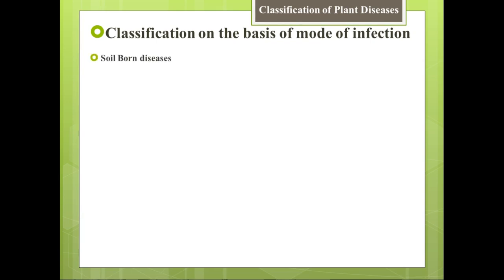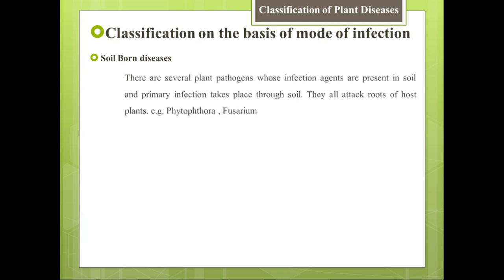Next is classification on the basis of mode of infection — ke infection ke mode ki base pe plant diseases ko kitne hisson mein classify kiya gaya hai. Number one is soil-borne disease. There are several plant pathogens whose infection agents are present in soil and primary infection takes place through soil. Kaafi saare pathogens aise hain jinke infection agents soil ke andar hote hain aur jo primary infection hoti hai woh soil se hoti hai. They attack the roots of host plants — ye pathogens hamesha host plant ki roots pe hamla karte hain. Inko kehte hain soil-borne diseases. For example: Phytophthora, Fusarium, etc.